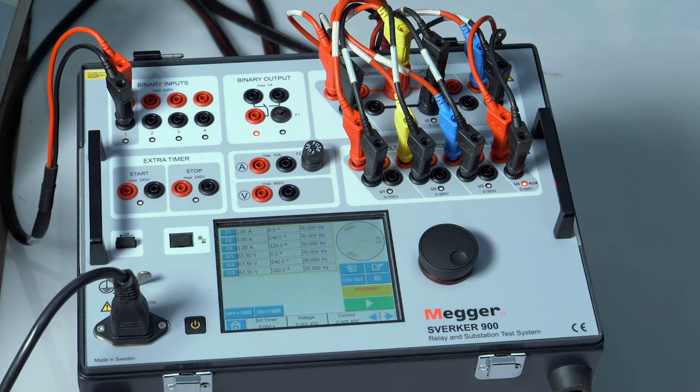Multiple harmonic injection. In many applications, multiple harmonics such as second harmonic for transformers, third harmonic for generators may be required to be injected for testing of relays. In Sverker 900 we can inject multiple harmonics.